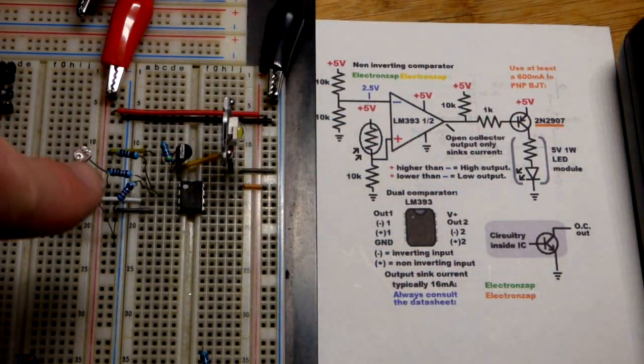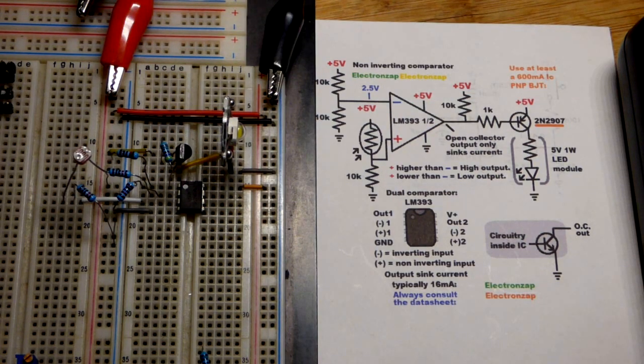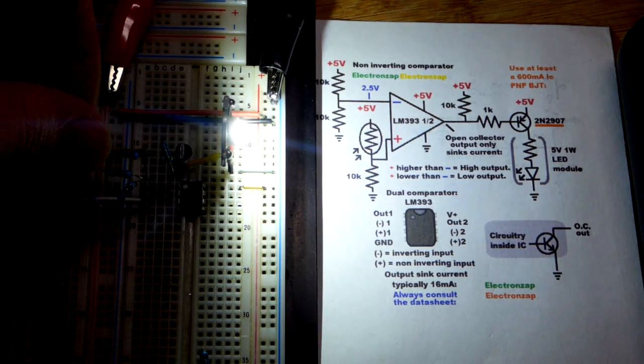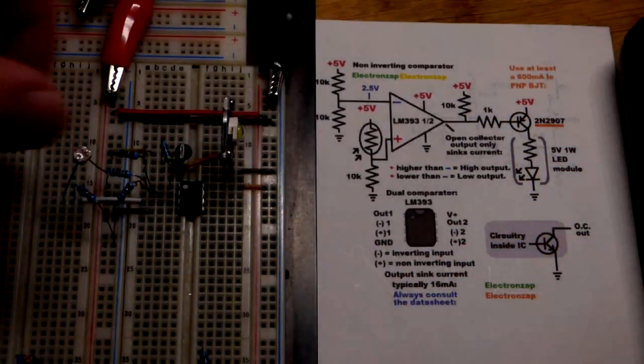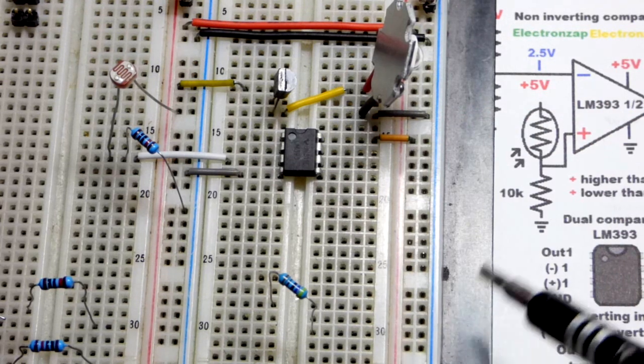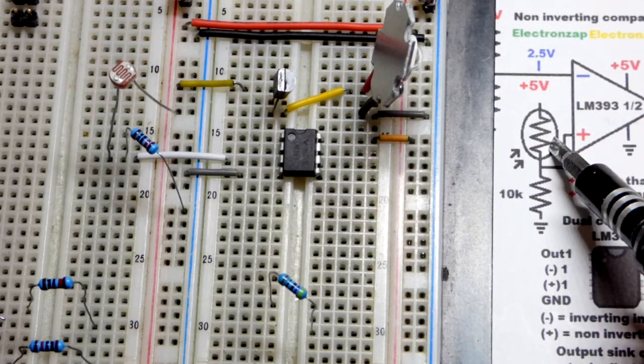If we get the voltage of our light dependent resistor voltage divider halfway, then it's kind of like halfway lit. Now I removed some components so we can get a better view and zoomed in.